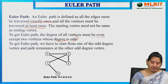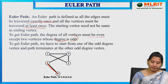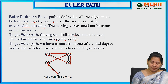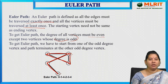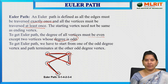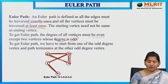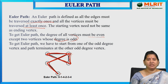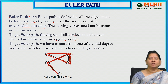For example, starting from vertex 0: 0 to 1, 1 to 4, 4 to 2, 2 to 3, 3 to 4. The starting and ending vertices are not the same. No vertex is repeated and no edges are repeated. So this is called an Euler path.